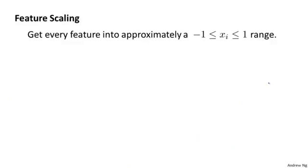More generally, when we're performing feature scaling, what we often want to do is get every feature into approximately a minus 1 to plus 1 range. Concretely, your feature x0, that's always equal to 1, so that's already in that range. But you may end up dividing other features by different numbers to get them into this range.